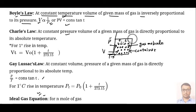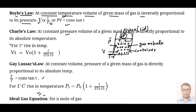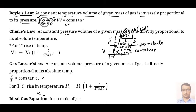Suppose this is your vessel and this portion is your piston or lid of the container. If you increase the amount of pressure on this piston, then this piston will go in the downward direction and we can say that volume of the gas will decrease. That's why volume is inversely proportional to pressure, and from here we can say that PV is equal to constant.